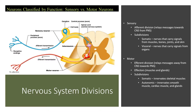There are two subdivisions of the sensory, or afferent, division. First is the somatic subdivision, which involves nerves that carry signals towards the CNS from muscles, bones, joints, and the skin. There's also the visceral subdivision of the sensory division, which involves nerves that carry signals from organs to the central nervous system.